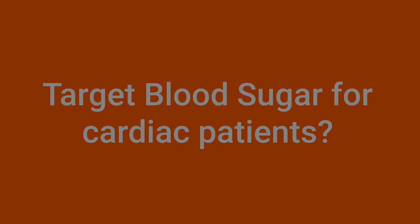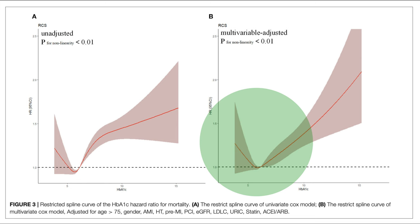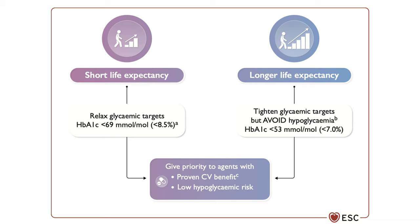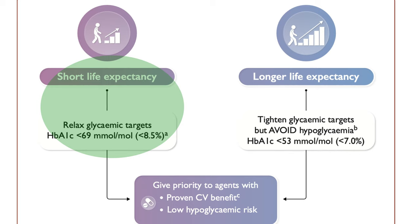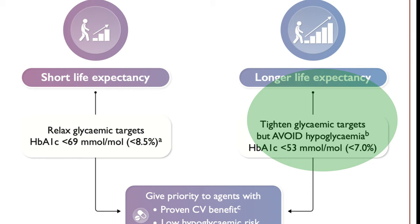We have a U-shaped relationship between hemoglobin A1c and clinical outcomes, so lower hemoglobin A1c is not always better. Hypoglycemia is associated with increased risk of cardiovascular events, so we need to personalize the glycemic targets, minimize hypoglycemia, and limit glucose variability. For frail patients or those with short life expectancy, the target hemoglobin A1c is relaxed to less than 8.5%. For those with longer life expectancy, the target is less than 7%, while avoiding hypoglycemia.